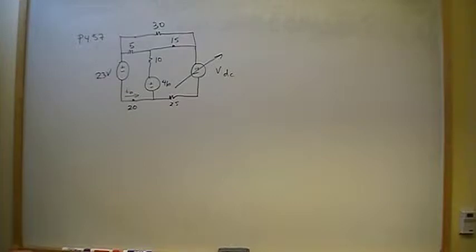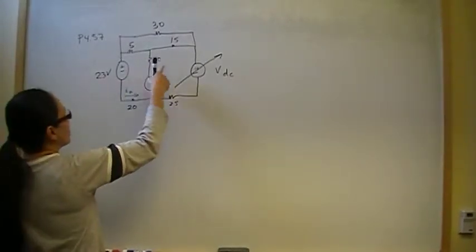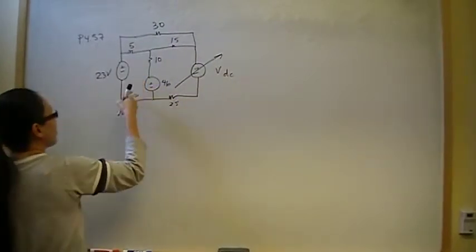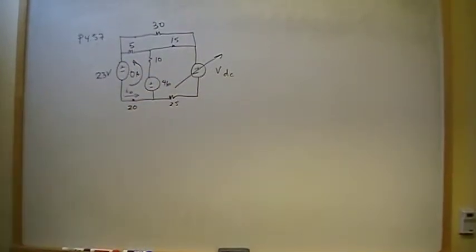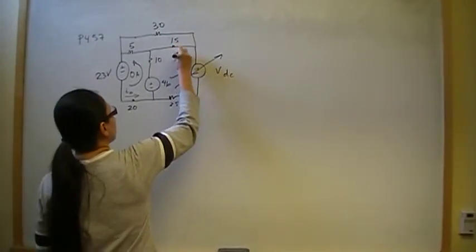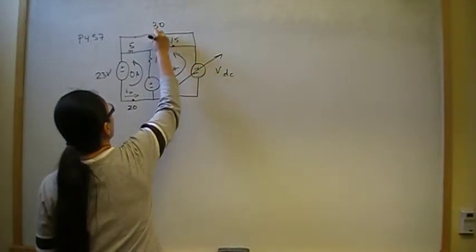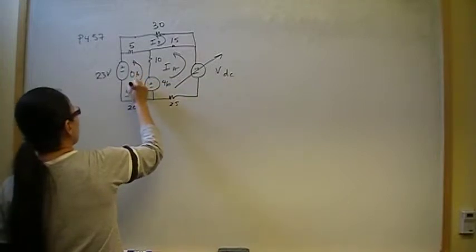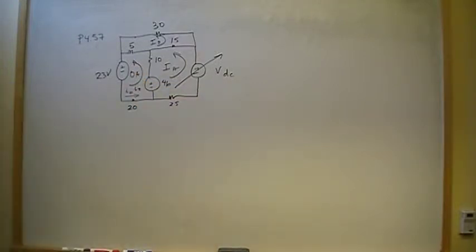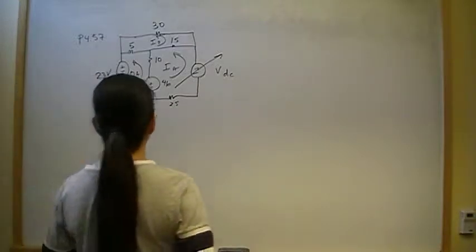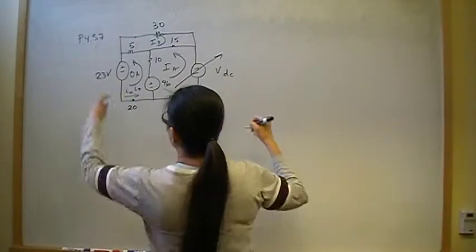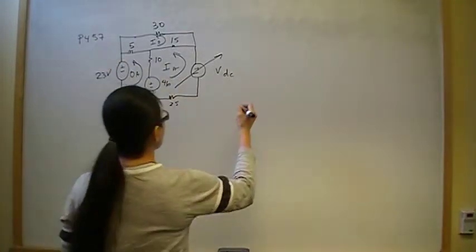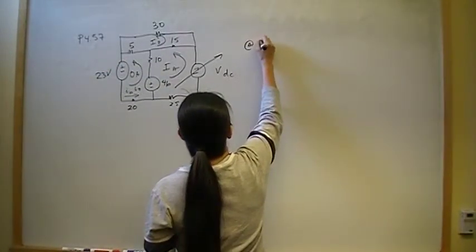Using the mesh method: we know I0 is going to be zero, so that mesh current is zero amps going in that direction. The other two are I_A and I_B. So let's do our normal mesh equation, starting right here. The mesh equation at I0: the current enters the positive terminal of the 23-volt source, so we write plus 23.